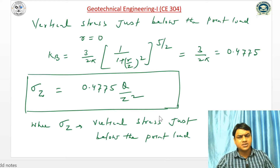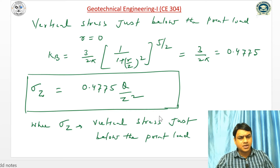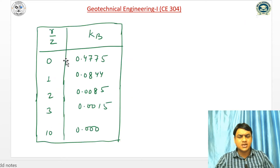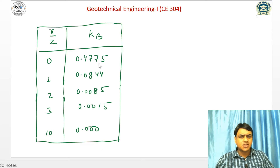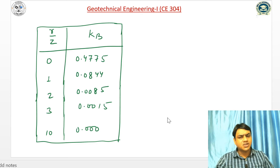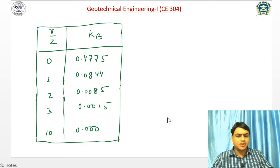We can see that vertical stress is a function of R/Z. At a certain depth, the vertical stress is only a function of R/Z and is independent of material properties like Young's modulus of elasticity and Poisson's ratio. As the R/Z value increases, the Boussinesq influence factor decreases, and the vertical stress also decreases.